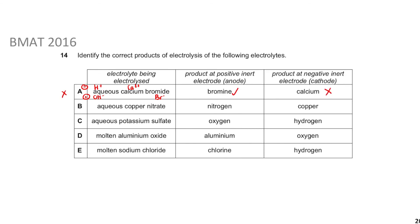For option B - aqueous copper nitrate: we have H+, OH-, Cu2+, and NO3-. At the positive electrode: nitrate (NO3-) is not a halide, so OH- oxidizes - meaning nitrogen should not form at the anode. Since option B shows nitrogen forming at the positive electrode, option B is incorrect. At the negative electrode, the less reactive copper would form, but the nitrogen error rules this option out.